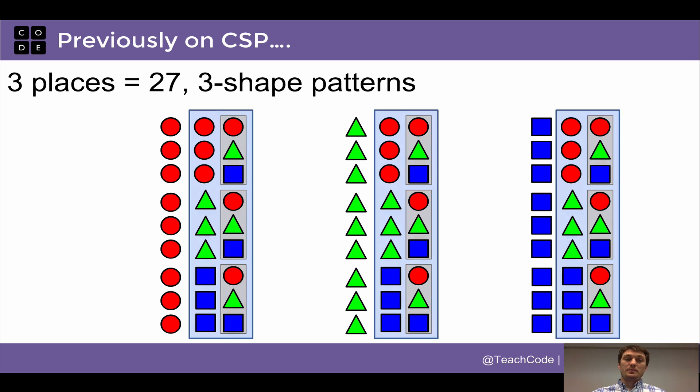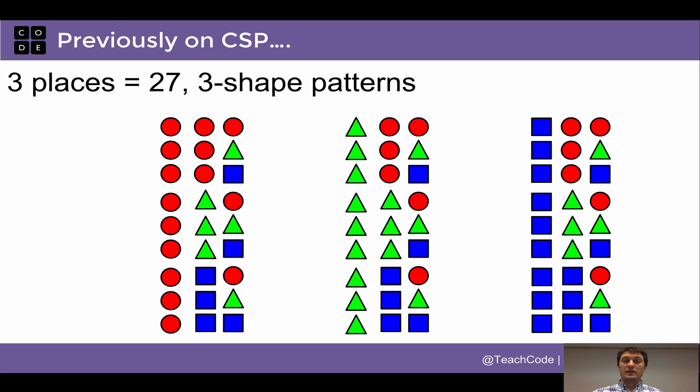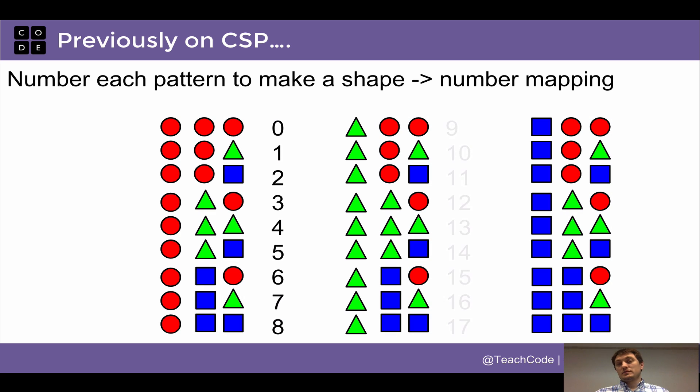To take the next step, once I have generated them, I can put a number, a decimal number next to each one, and this can be the beginning of a number system because I have a unique shape pattern mapped to a specific number. So this is the beginnings of a circle, triangle, and square number system, and I would just have to know which pattern maps to which numbers.